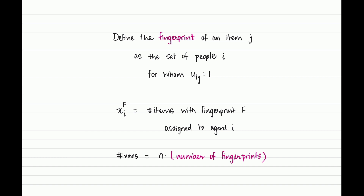How many fingerprints can there be? We have n people, and every fingerprint corresponds to a subset of people — two distinct subsets correspond to two distinct fingerprints. So the number of fingerprints is the number of subsets of n people, which is 2^n. The number of variables is therefore n times 2^n. This may look expensive since it gets plugged into the running time of the form p^{O(p)}, but the key point is that it is a pure function of n.